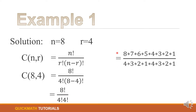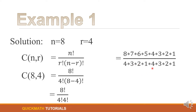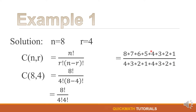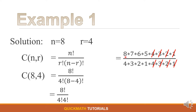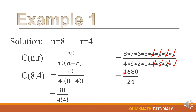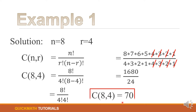8 factorial is equal to 8 times 7 times 6 times 5 times 4 times 3 times 2 times 1, over 4 factorial (4 times 3 times 2 times 1) times another 4 factorial (4 times 3 times 2 times 1). We can cancel out the same factors — cancel 4, 3, 2, and 1 — so we multiply 8 times 7 times 6 times 5, giving 1680, divided by 24, and the answer is 70.